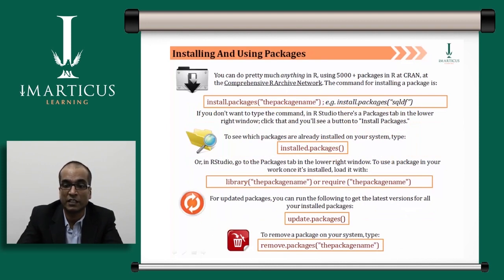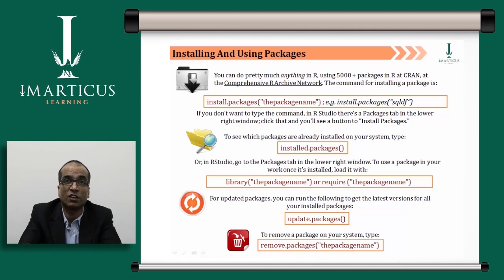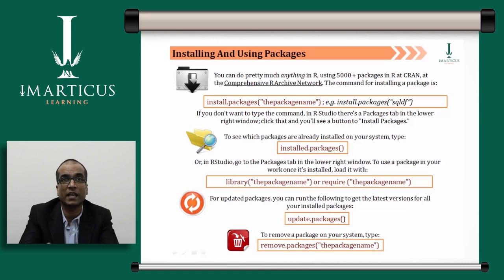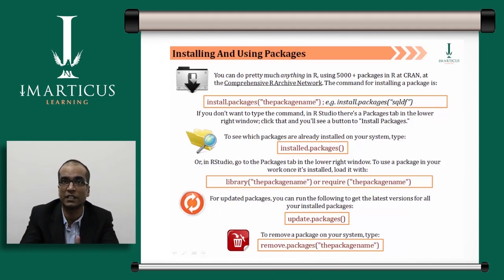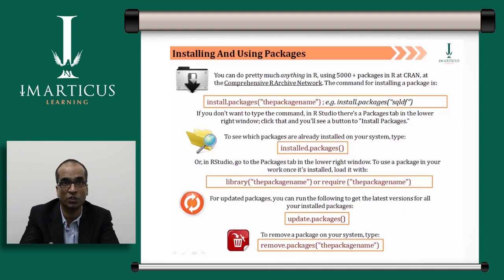R has default base packages, but there are more than 5,000 packages listed on CRAN that you can install as needed. You can install them via the menu-driven option or by typing code directly in the console. For example, to install a package called 'amap' or 'sqldf' (SQL data frames), you type install.packages('sqldf') or install.packages('amap') and press Enter in the console, or Ctrl+Enter in the script window, and R will start installing the package.